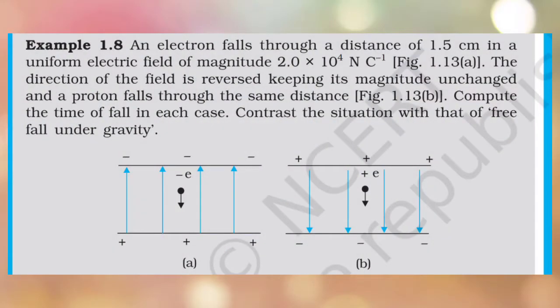Example 1.8. An electron falls through a distance of 1.5 cm in a uniform electric field of magnitude 2 into 10 raise to 4 Newton per Coulomb, as shown in figure A. The direction of the electric field is reversed keeping its magnitude unchanged, and a proton falls through the same distance as shown in figure B. Compute the time of fall in each case and contrast the situation with that of free fall under gravity.